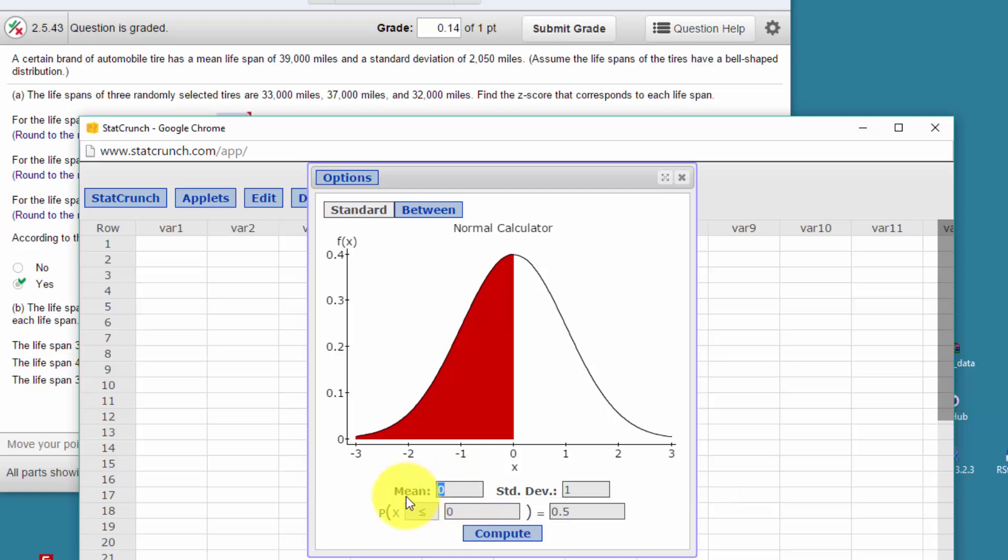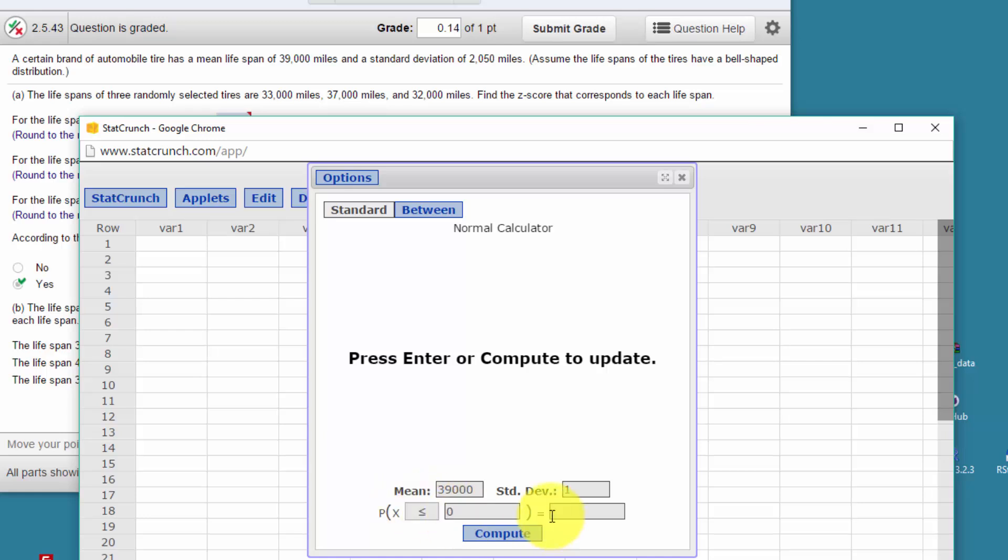We're given that the mean is 39,000 miles, standard deviation 2,050, and I'm going to put in here our first x value of 33,000.